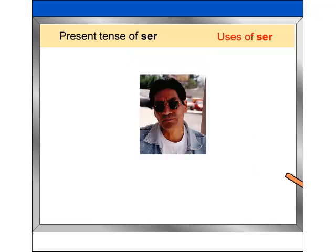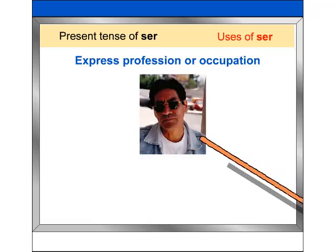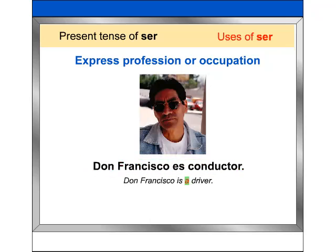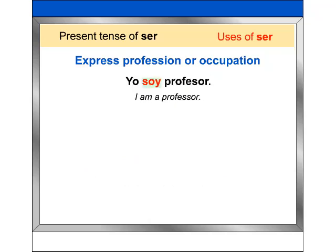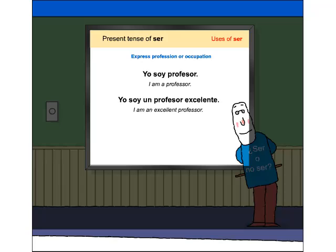Ser is also used to express profession or occupation: 'Don Francisco es conductor.' Remember this: unlike English, Spanish does not use the indefinite article after ser when referring to professions unless accompanied by a descriptive adjective. For example: 'Yo soy profesor.' 'Yo soy un profesor excelente.' Hasta mañana.